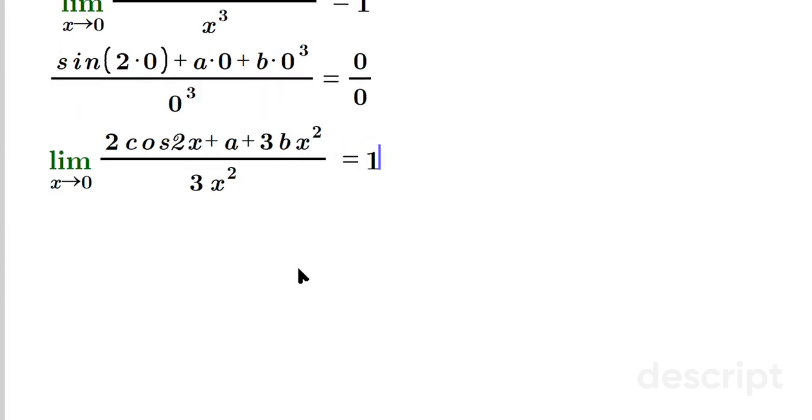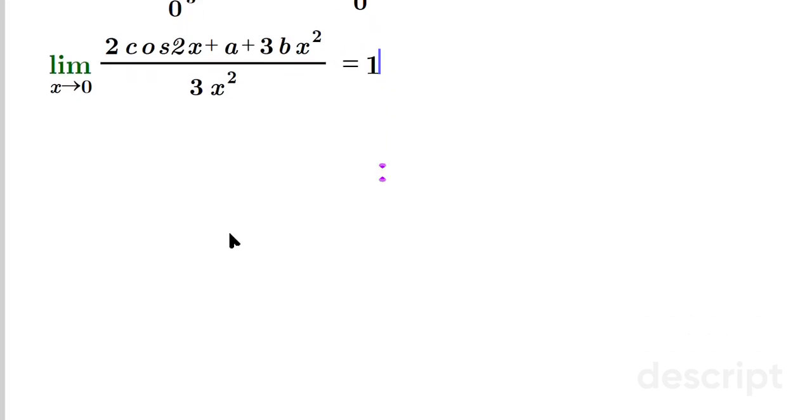Does this help us? When x has the value 0, plug it in directly. You're gonna have 2 cosine of 2 times 0 plus a plus 3b times 0 squared. This is just cosine of 0 which is 1, 1 times 2 is 2 plus the remaining a. In order for this to be of the form 0 over 0, the numerator 2 plus a has to be equal to 0, which immediately tells us that a has to be negative 2.